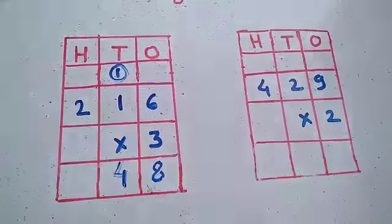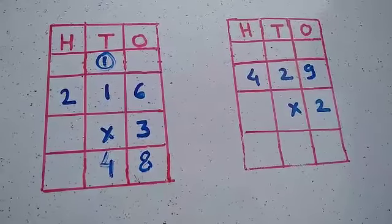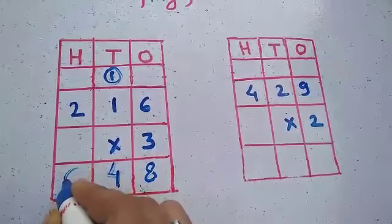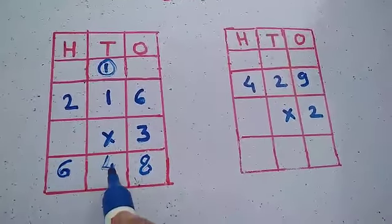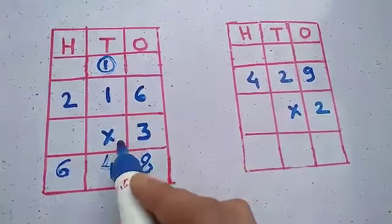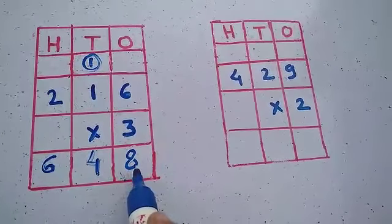Now 3 into 2. What is 3 twos are? 3 ones are 3, 3 twos are 6. So we will write here 6. Now 648. 216 multiply 3 is equal to 648.